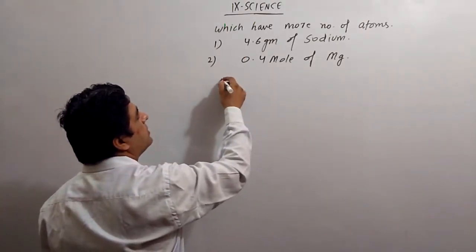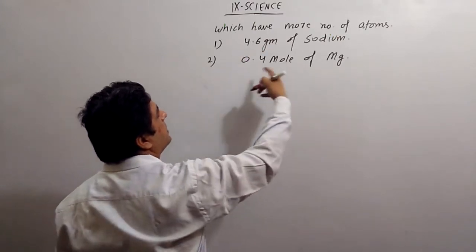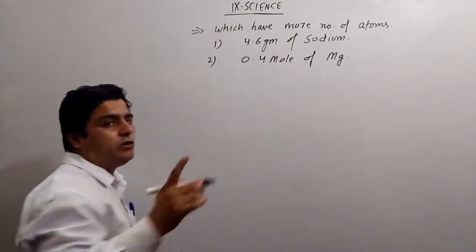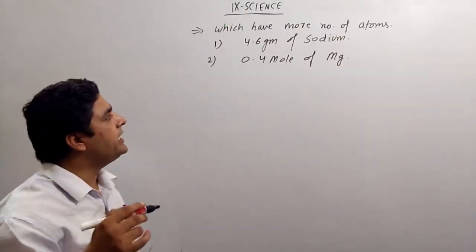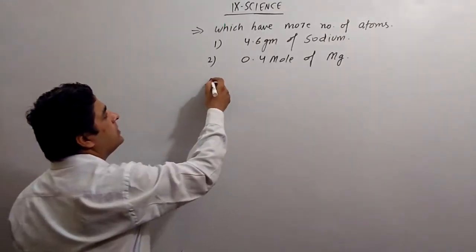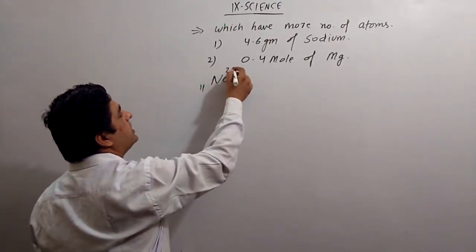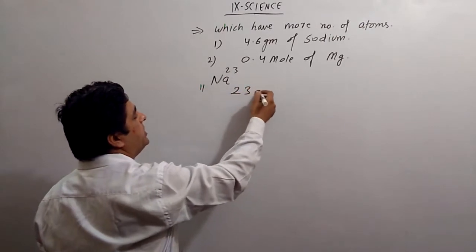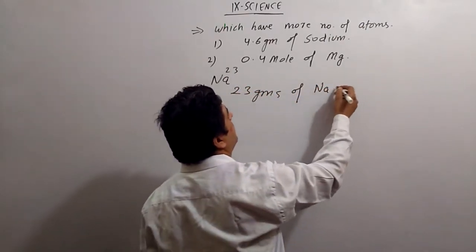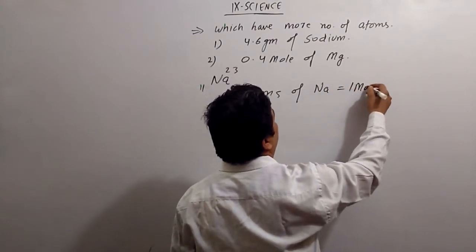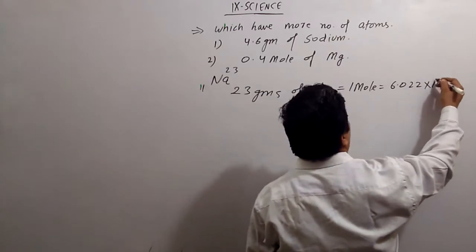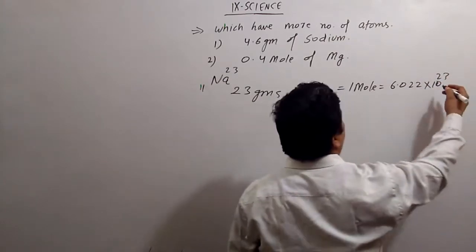This is in grams and we need to find out the atoms. So find the relation between grams and number of atoms. Sodium is Na-23. It means 23 grams of sodium equals 1 mole, and 1 mole contains 6.022 × 10^23 atoms.